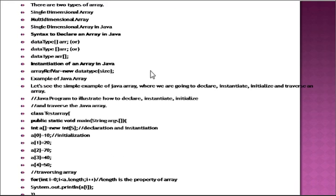There are two types of arrays in Java: first, single-dimensional array, and second, multi-dimensional array. For a single-dimensional array, the syntax is: you declare the data type, then a subscript bracket, then the array name. You can also declare it as data type, space, subscript, and array name, or as data type, array name, and subscript. There are different patterns to declare an array in Java.